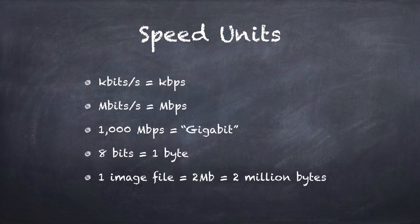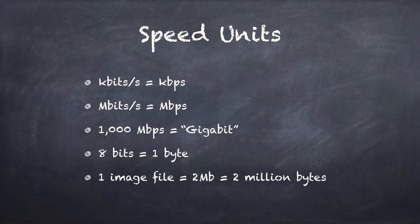Let's look at these units so you understand them. Kilobits per second, sometimes written as Kbps, is 1000 bits, and a bit is a one or zero. A megabit is a thousand times that. And when you have 1000 megabits per second, providers often call that gigabit — though some providers misleadingly call even 100 megabits per second 'gigabit' bandwidth.